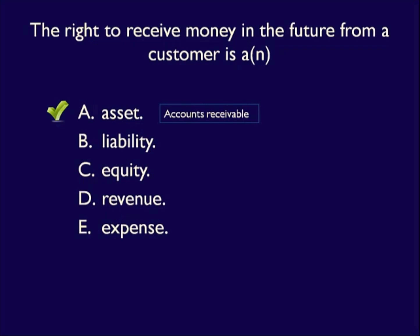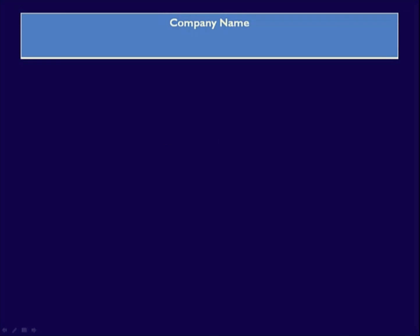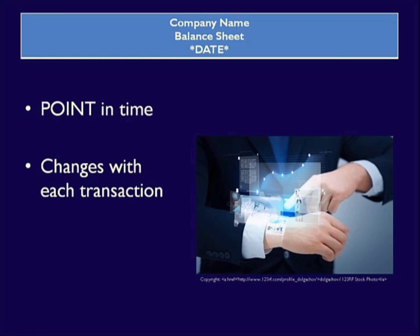Now that we understand the elements of the Balance Sheet, let's look at an example. The statement is large so it's divided into sections, but on paper all sections appear together, one right after the other. As always, the statement starts with a heading, which must include the business name and the title of the financial statement. One change from previous statements: the Balance Sheet is at a point in time, not for a period of time. Because every time a business has a transaction its financial position changes — like spending $10 in your pocket on a Timmy's — the Balance Sheet is a snapshot, one second of time.